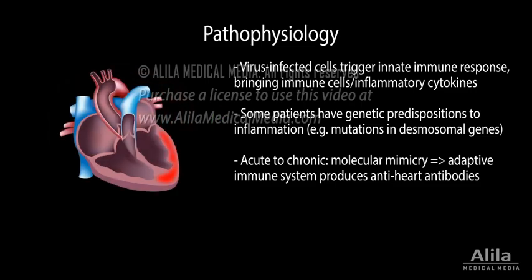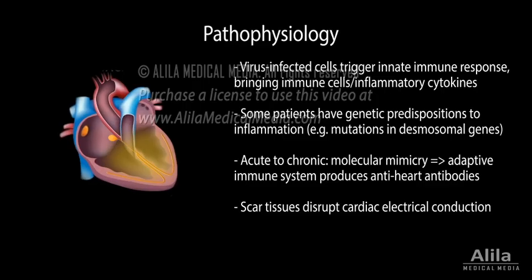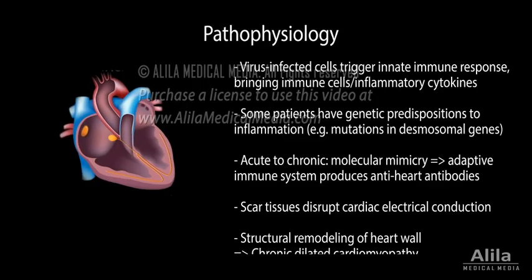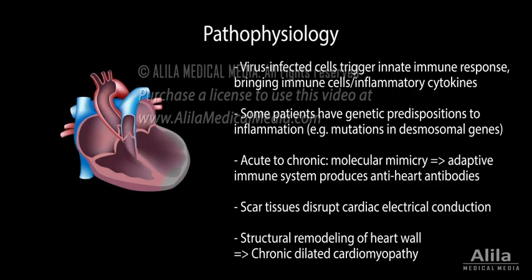Chronic inflammation eventually leads to formation of scar tissues within the myocardium, disrupting cardiac electrical conduction and increasing the risk of arrhythmias and other abnormalities. Over time, the heart wall undergoes structural remodeling, becoming stiffer and thinner, and chronic dilated cardiomyopathy may result.